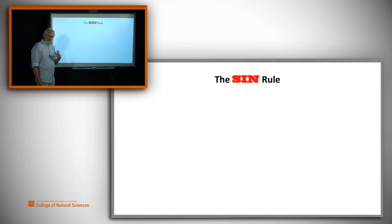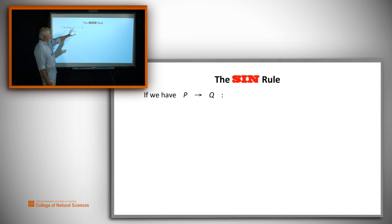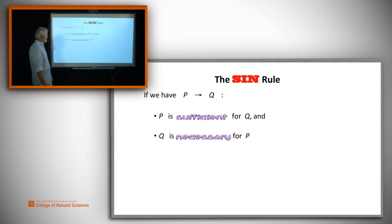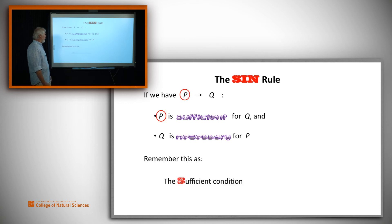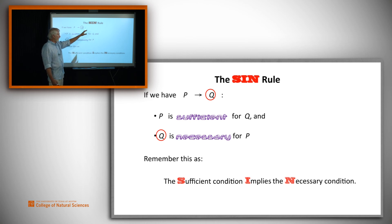Sometimes people get necessary and sufficient conditions backwards, so here's a rule to remember them: the SIN rule. Suppose we have statement P implying statement Q. In that case, P is a sufficient condition for Q since P implies Q. Alternatively, Q is necessary for P since Q follows from P. The sufficient condition (P) implies the necessary condition (Q). Sufficient implies necessary — think of this as the SIN rule.